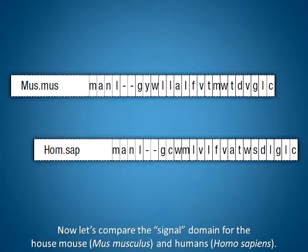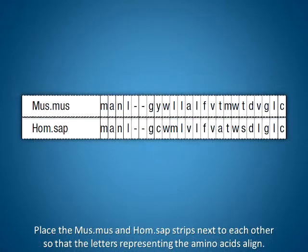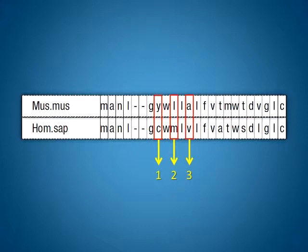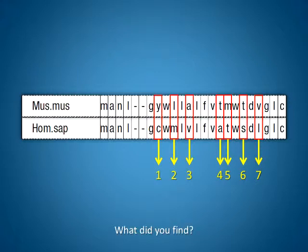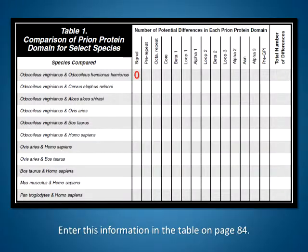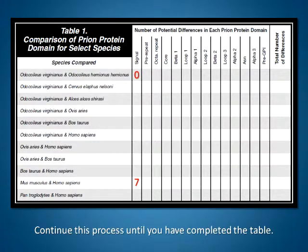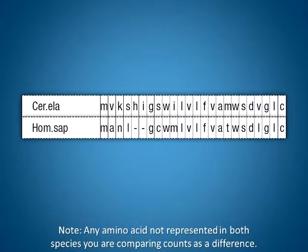Now let's compare the signal domain for the house mouse and humans. Place the MUS.MUS and HOM.SAP strips next to each other so that the letters representing the amino acids align. Count the number of differences in the letters. For this example, there are seven differences. Enter this information in the table on page 84. Continue this process until you have completed the table. Note: any amino acid not represented in both species you are comparing counts as a difference.